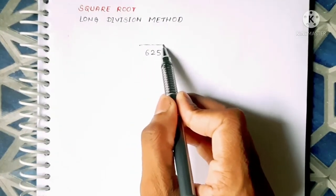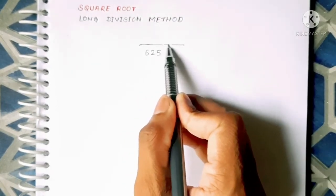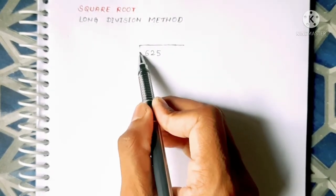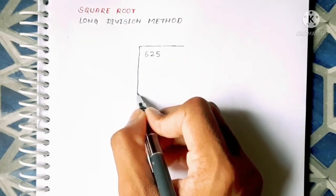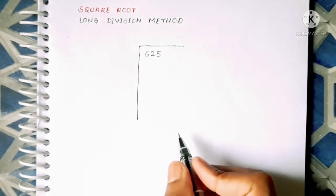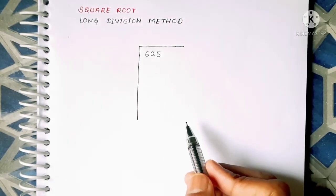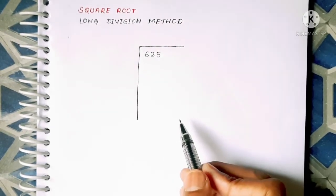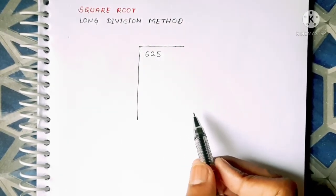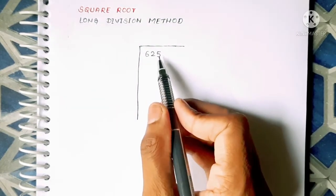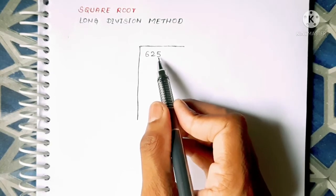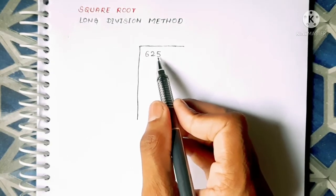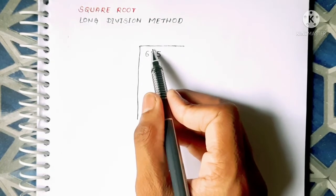So to find the square root there are also some rules. We will go through those steps one by one. Our first step is to put a bar, means we have to take a pair of numbers starting from the ones digit, starting from the ones digit we have to take a two pair of digits.